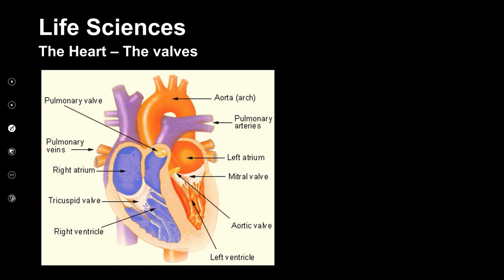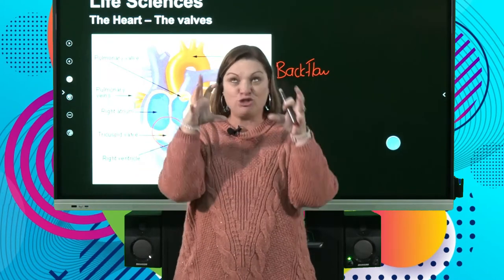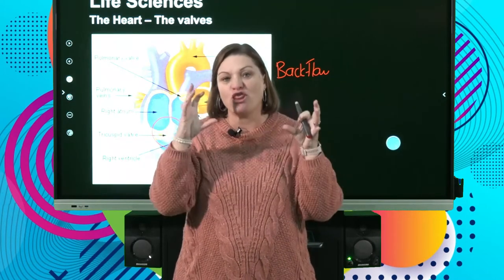Now we're going to look on the inside — I'm going to cut the heart open. When I open the heart, you are going to see some structures immediately, and they are going to be the valves. The heart valves prevent backflow — we don't want the blood to go backwards. There's no reverse. When I take and look into the internal structure, as soon as I open up, you're going to see these white, stringy, flappy things — those are the valves.